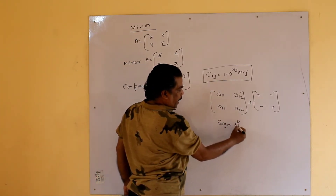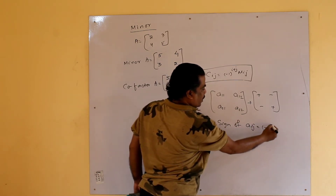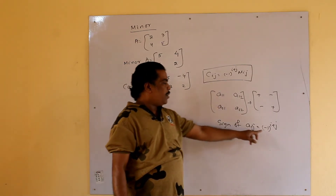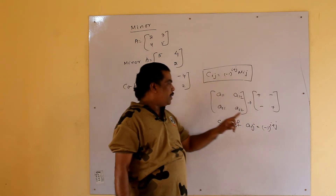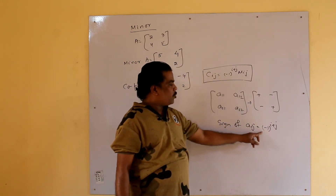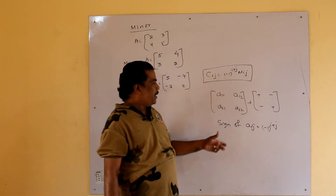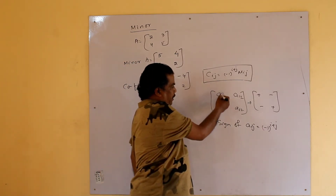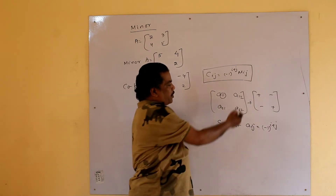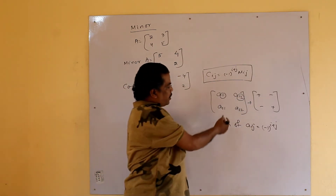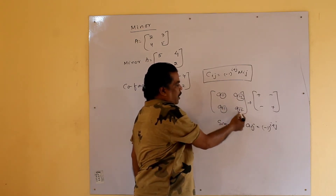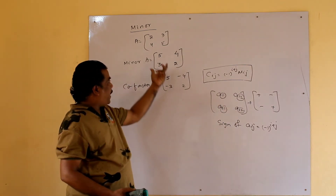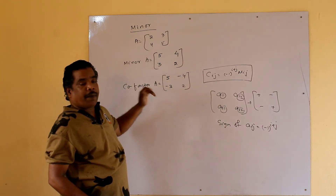If we write the sign before the minor, we can find the co-factor. The sign of element A11 is (-1)^(1+1) = plus 1. The sign of A12 is (-1)^(1+2) = minus. If i plus j is even, we write plus; if i plus j is odd, we write minus. If we put the signs before the minor, we can easily find the co-factor.